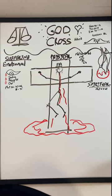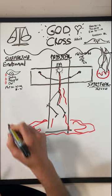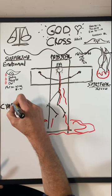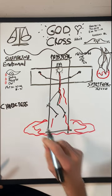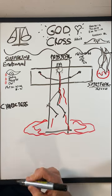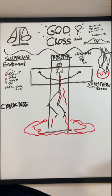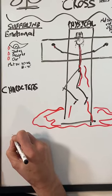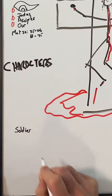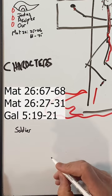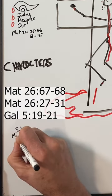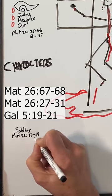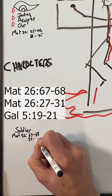All right, so this concludes the suffering of Christ. We're now going to move on to our characters in this story. So let me write down here the character. So there are a bunch of characters around the crucifixion and it's really important to understand these characters. So let's look at the first one. The first one is a soldier. We read about the soldiers in Matthew chapter 26, verse 67, 68, and also in 27 to 31.